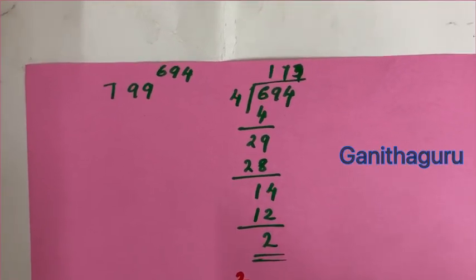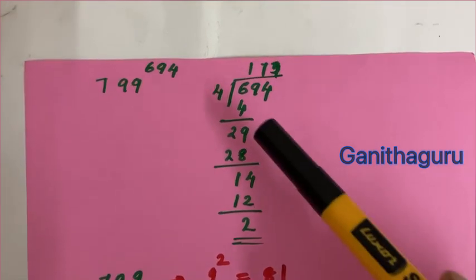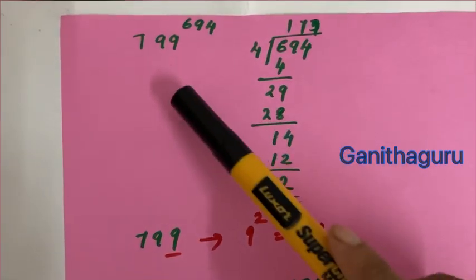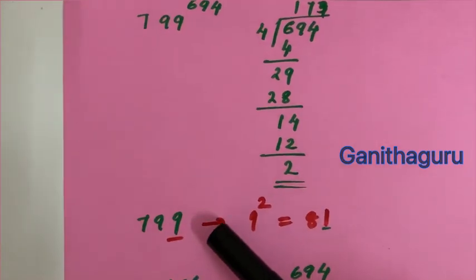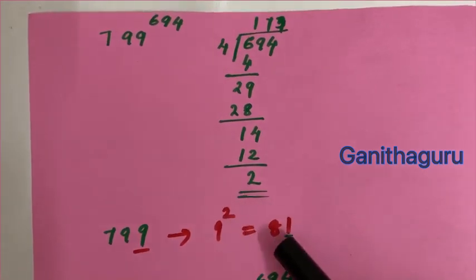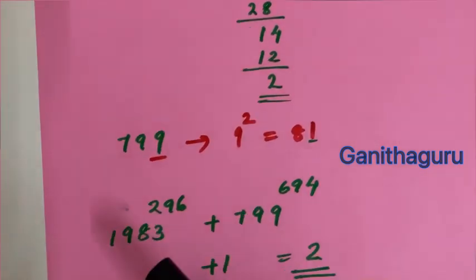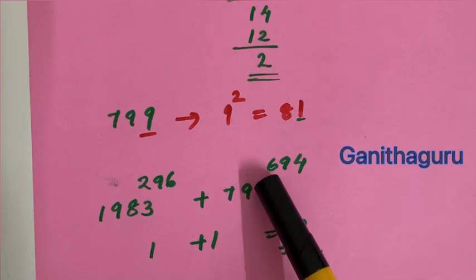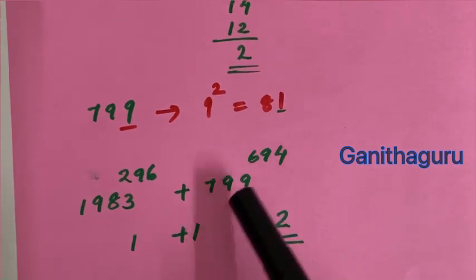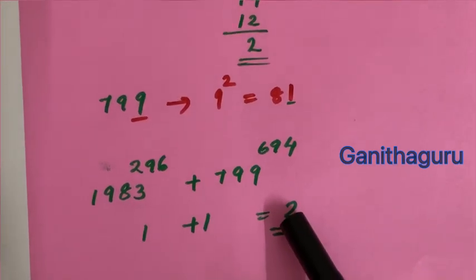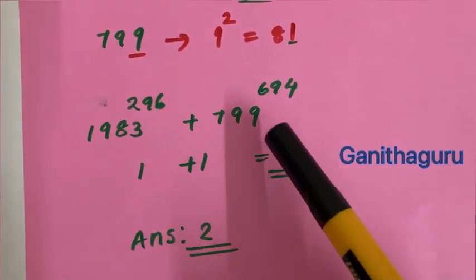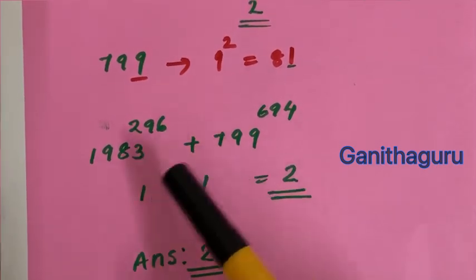For 799 raised to 694: last digit is 9. 694 divided by 2 gives remainder 0, so last digit raised to 2 is 9 raised to 2 is 81. Last digit is 1. The sum of last digits is 1 plus 1 equals 2.